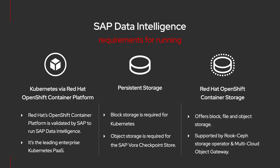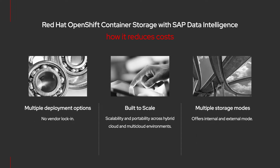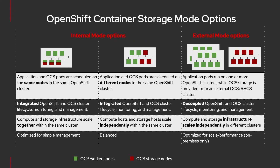The RADOS gateway is an S3-compatible object storage functionality that allows you to access data on multiple clouds from on-premise environments or in the cloud via Red Hat's multi-cloud gateway. Red Hat's OpenShift container storage helps reduce costs with multiple deployment options, eliminating vendor lock-in, scalable storage for better performance, and internal and external modes.